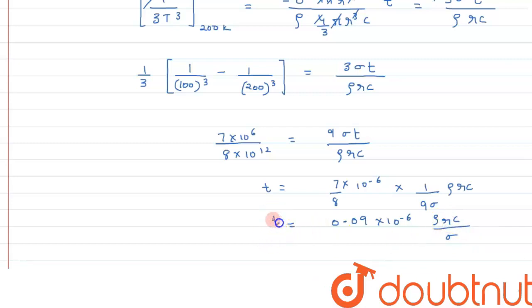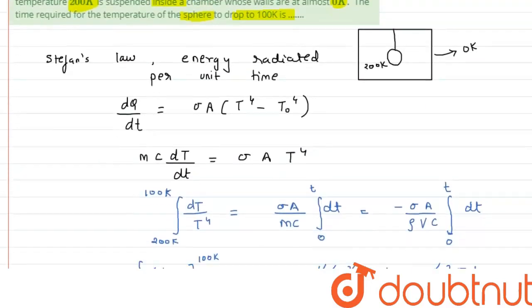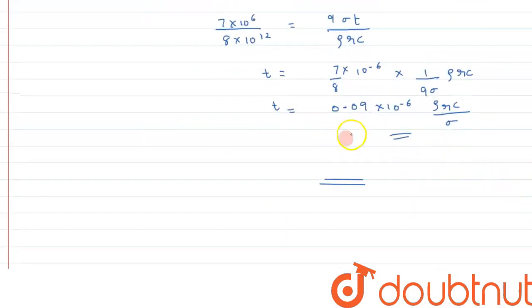So this is the final time we are getting. This much time it will take to reduce the temperature of the sphere from 200 to 100 kelvin. So I hope you have understood the concept, and thank you for watching.